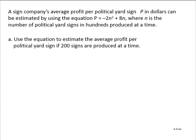A sign company's average profit per political yard sign, P in dollars, can be estimated by using the equation P equals negative 2n squared plus 8n, where n is the number of political yard signs in hundreds produced at a time.